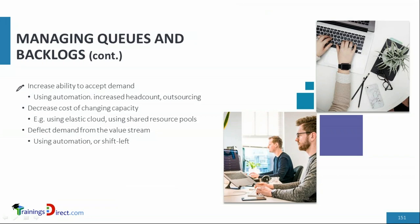Another way is to increase the ability to accept demand using automation — demands can be fulfilled faster. For example, if a team of five cannot handle 50 requests per hour, automation may allow even more than 50 requests to be accommodated. Other options include increasing headcount, though that may not always be feasible, and outsourcing to a supplier who can handle it more effectively with automation or better skills.